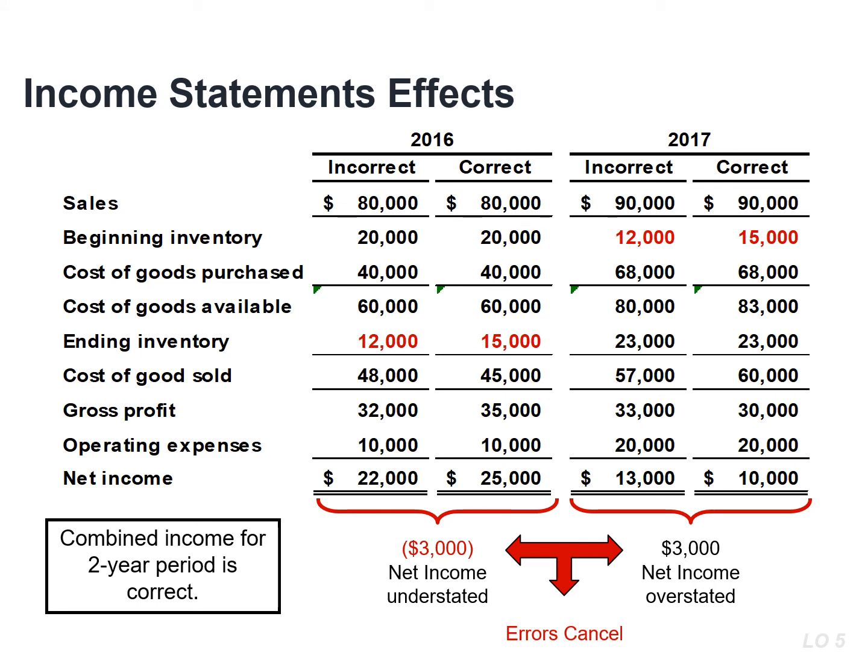You can see in this example that in 2016, net income was understated by $3,000, and then in 2017, net income was overstated by $3,000, so that these two errors offset each other at the end of year two.